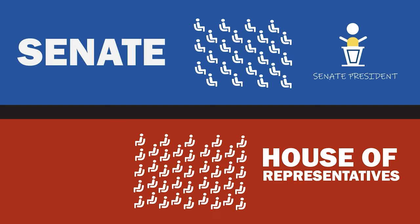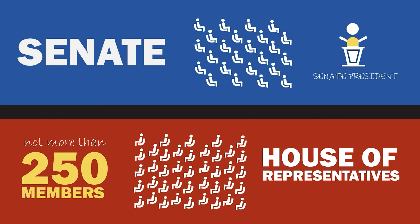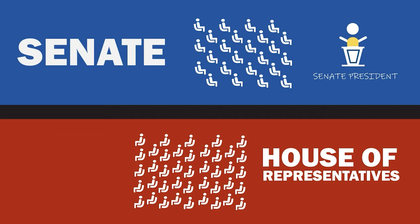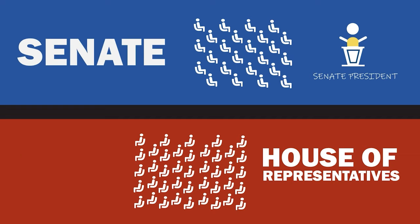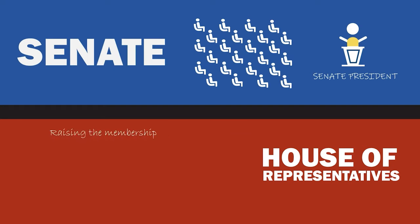The House of Representatives is composed of not more than 215 members, but the number may be increased by law as the population grows, and at least 20 percent of it shall be for party-list representatives. The House of Representatives is headed by the Speaker of the House.